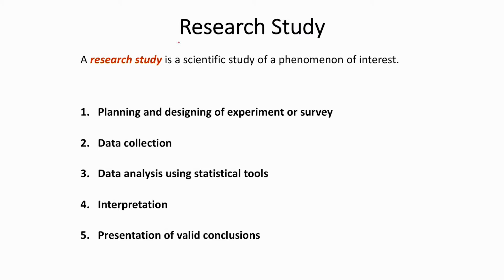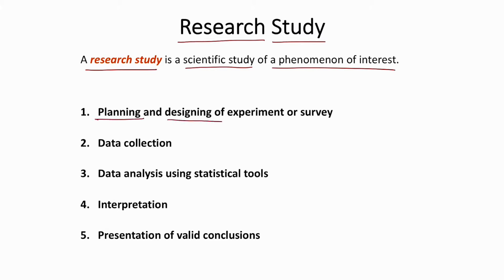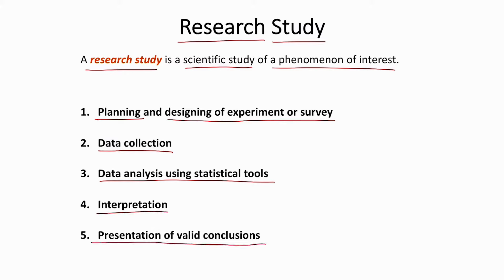Biostatistics is mainly used for research studies. A research study is a scientific study of a phenomenon of interest — for example, studying the efficacy or safety of a drug. The phases of a research study are: (1) planning and designing an experiment or survey, (2) collection of data, (3) analysis using statistical tools, (4) interpretation of data, and (5) presenting a valid conclusion — for example, reporting that eating a particular food reduces cancer risk by 20–30%.